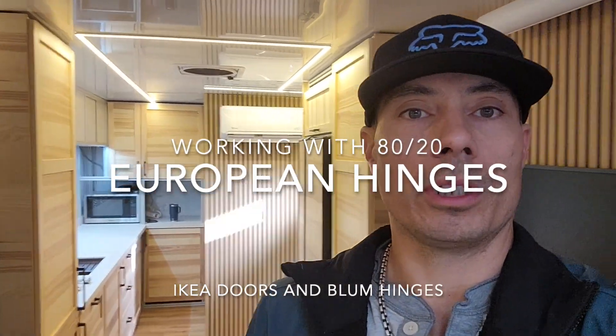Hey guys, we're just completing the build on this 28 foot cargo trailer and one of the challenges we've been dealing with has been figuring out how to get IKEA hinges or European hinges to work with 8020. There's some resources out on the internet but nothing overly clear, so I just wanted to do a quick video to help other people save some time.